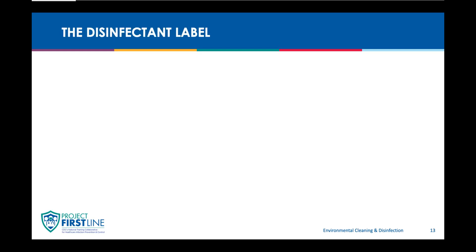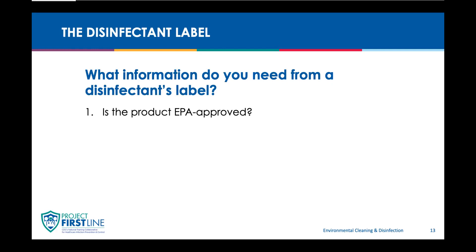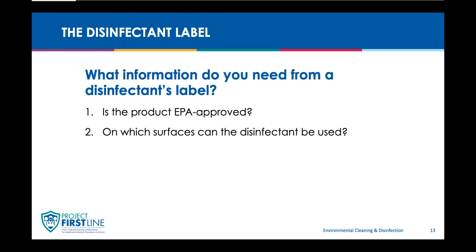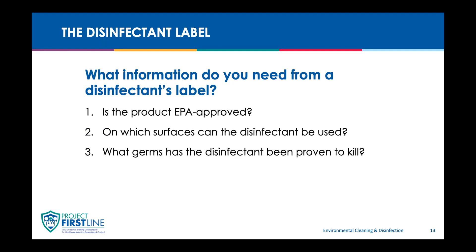While you can usually judge if something is clean just by looking at it, this doesn't work with disinfection. Because germs are too small for us to see, we can't judge how well something has been disinfected visually. That's why following the instructions when using disinfecting products is so important. From the label, you need to know: which surfaces the chemical can be used on, which germs it has been proven to kill, and whether the product needs to be diluted — meaning whether water or another substance needs to be added to bring the concentration down to a safe level.